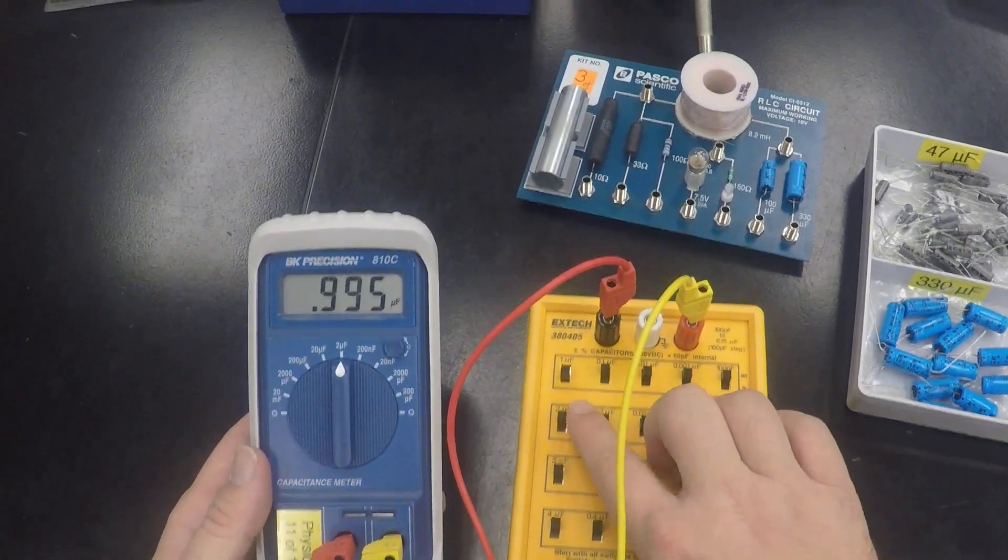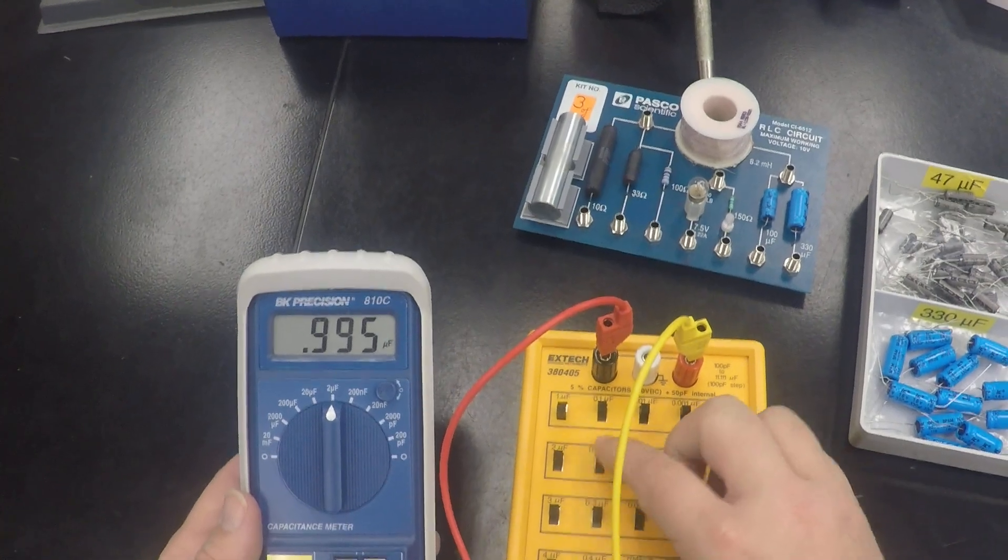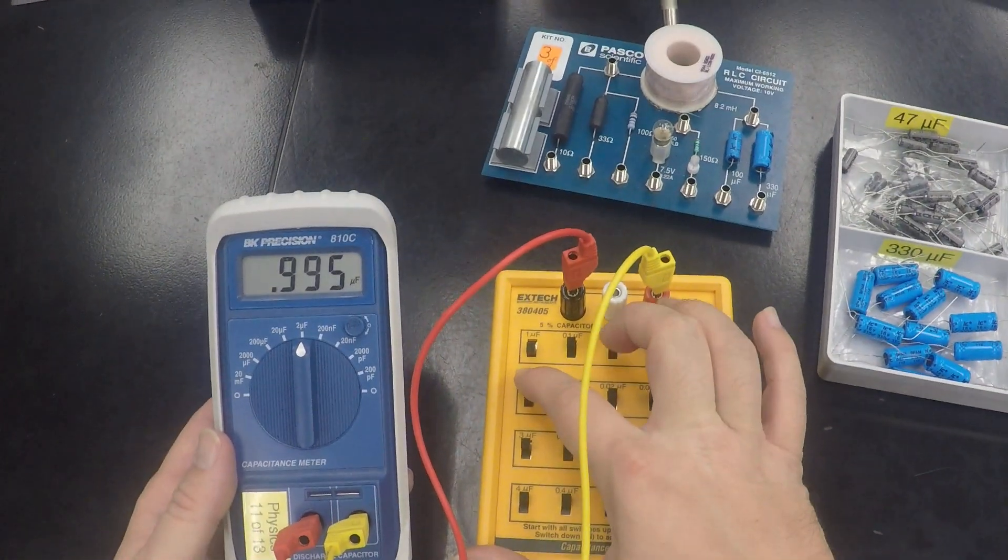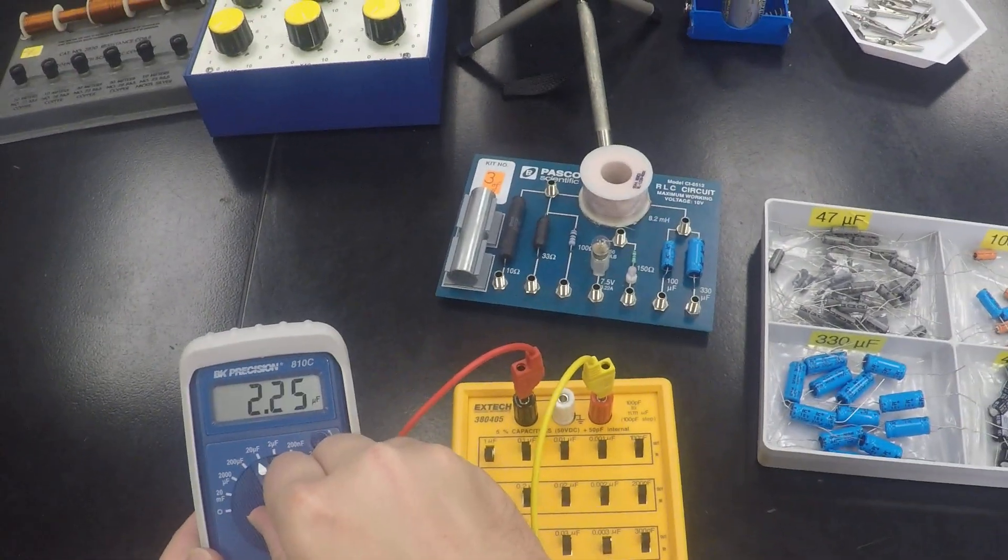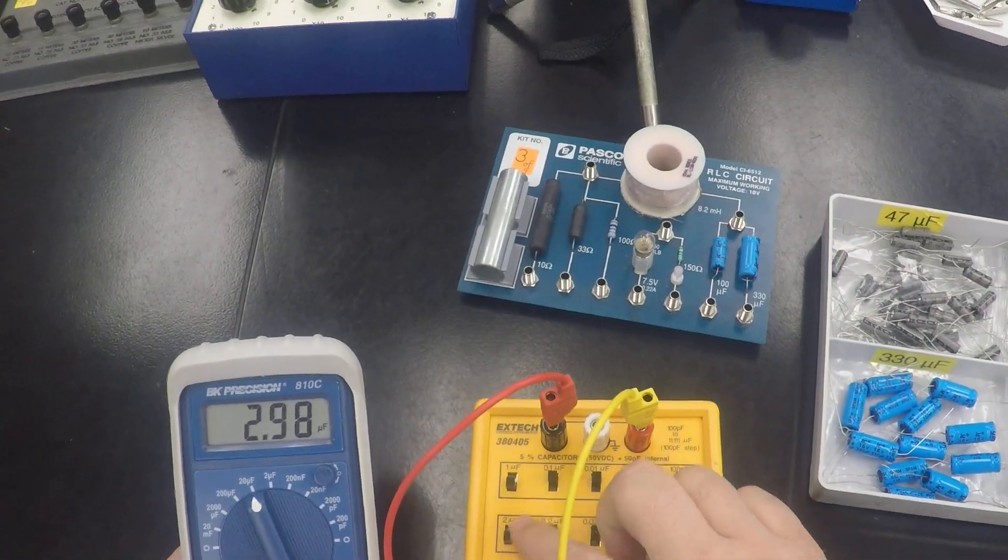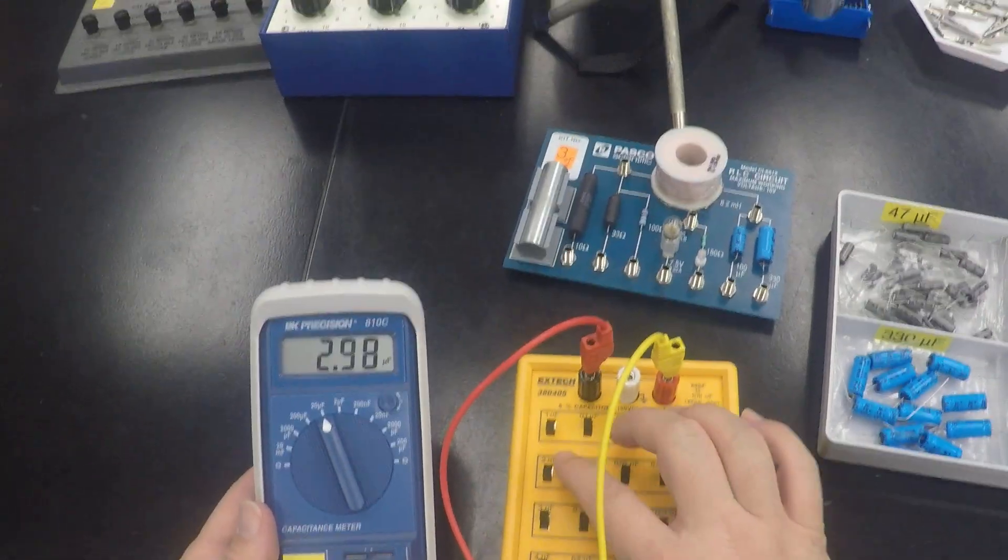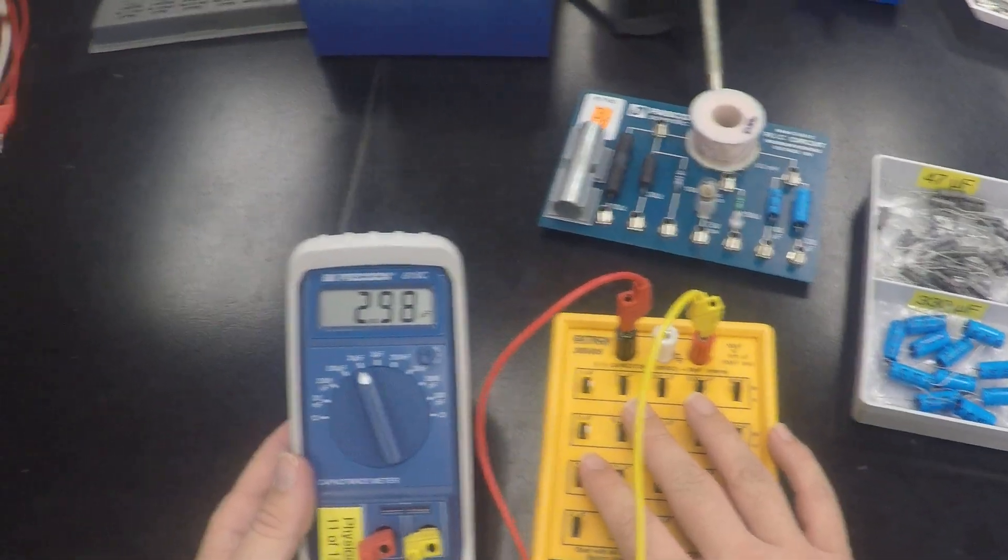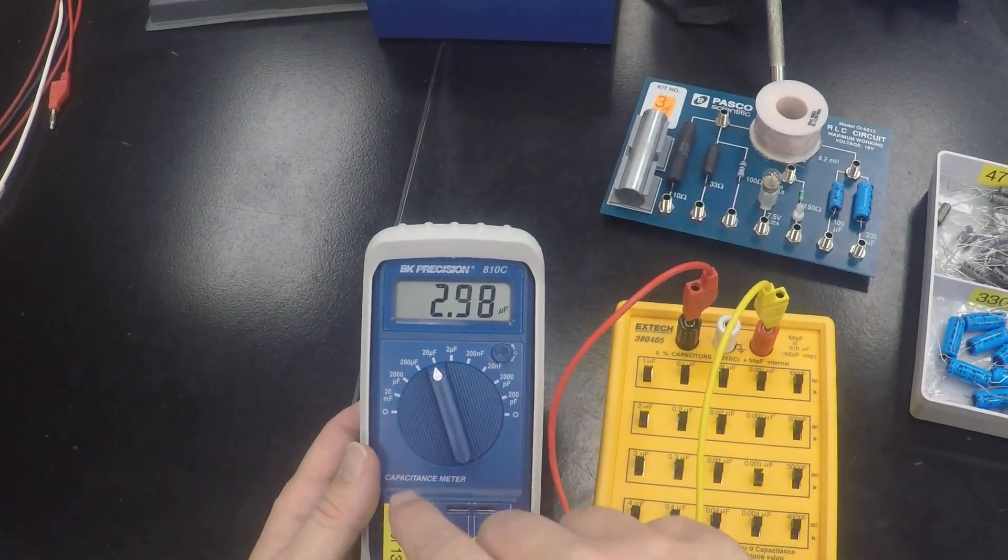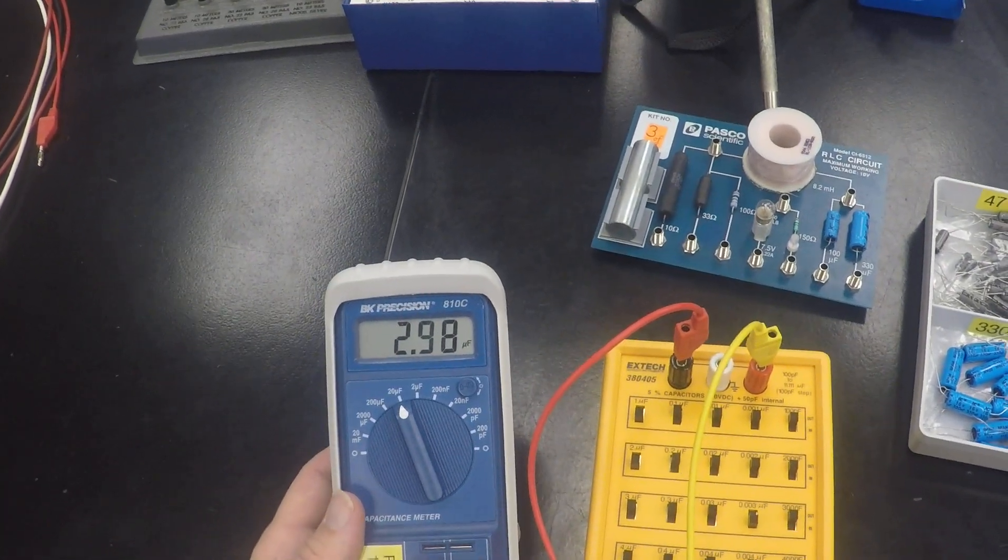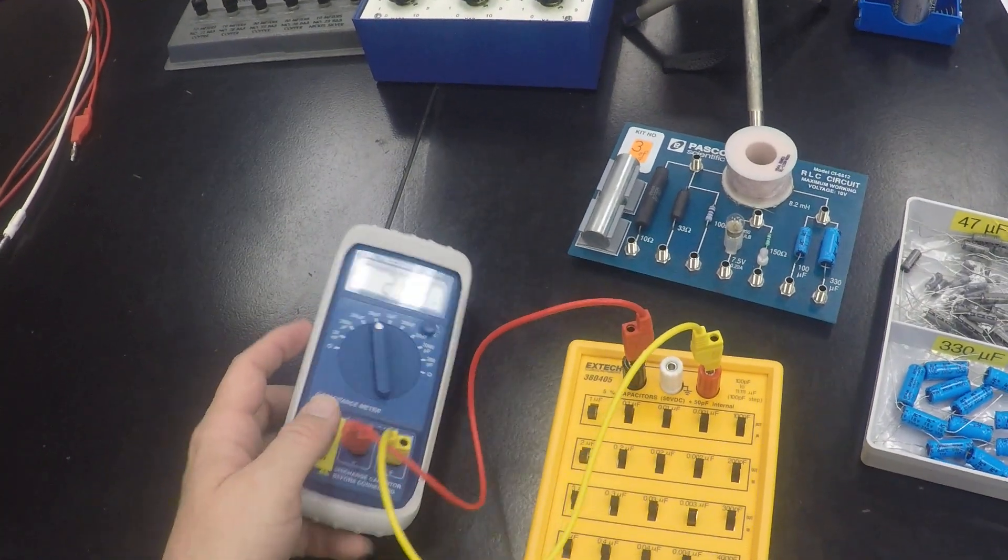Now, let's say that we don't want just 1 microfarad. Let's say we dial down the 2 microfarad switch. So that means what you have here is 1 and 2. These are both in series. That's what's happening behind the scenes. So you can see that gives us very close to a total of 3 microfarads.